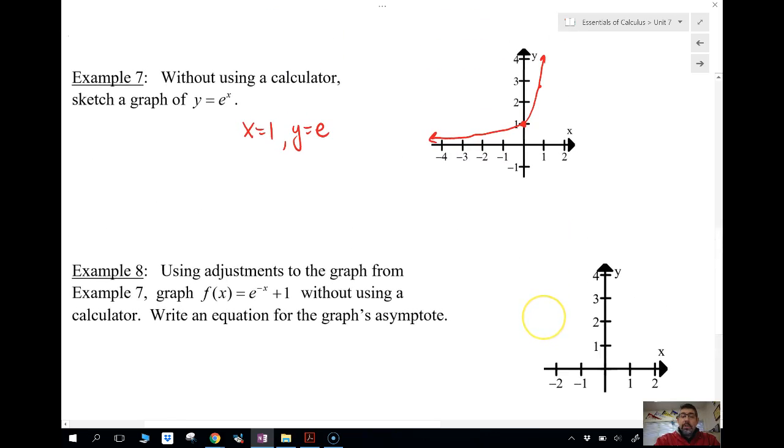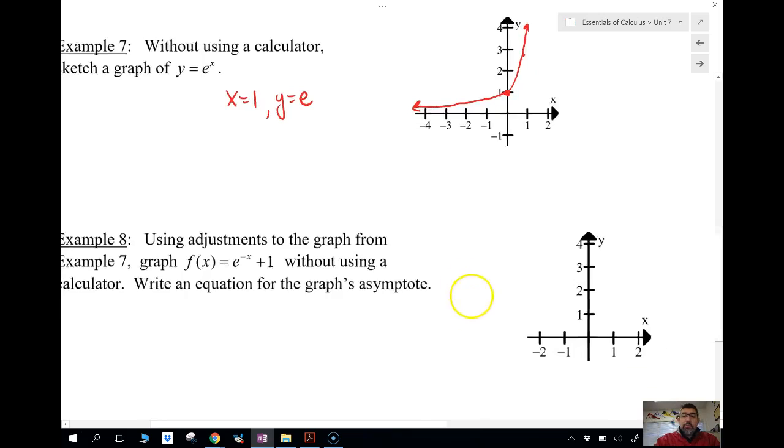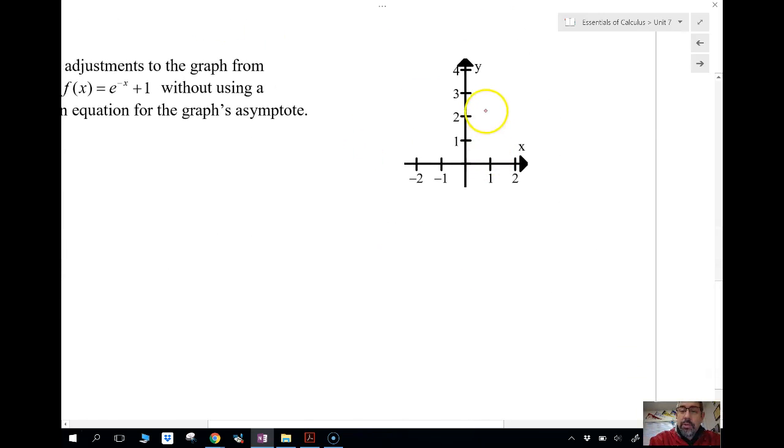So using adjustments to the graph that we just did, let's go ahead and graph y equals negative x plus 1. So here's what I'm going to do. I'm going to draw y equals e to the x like this.